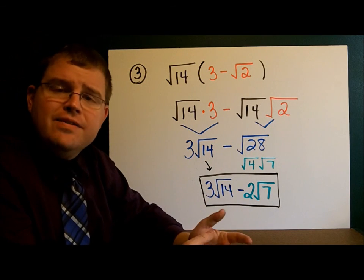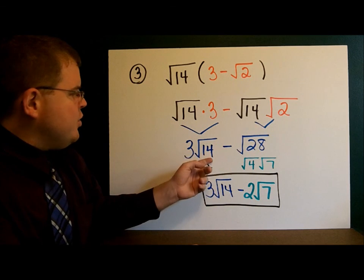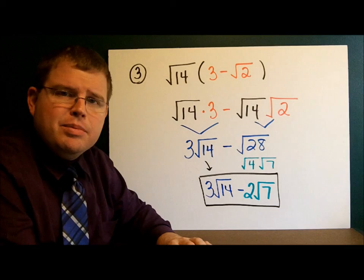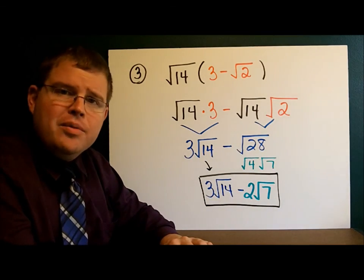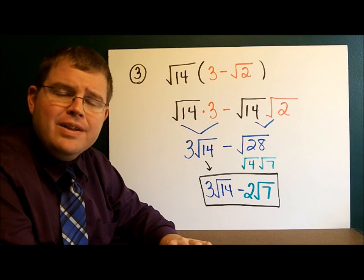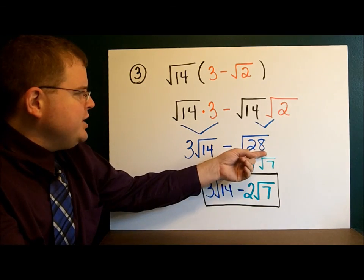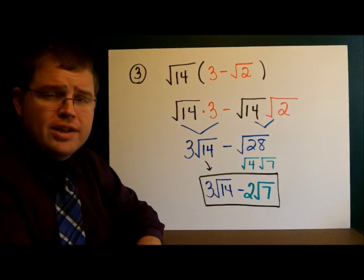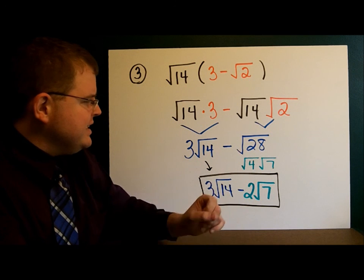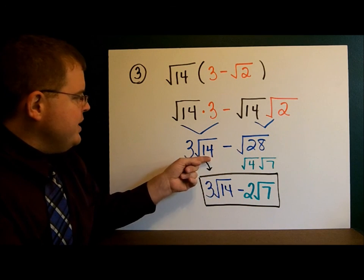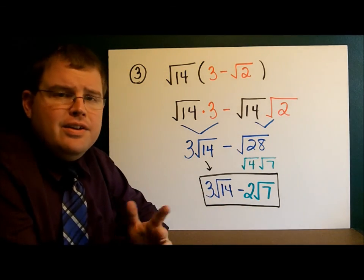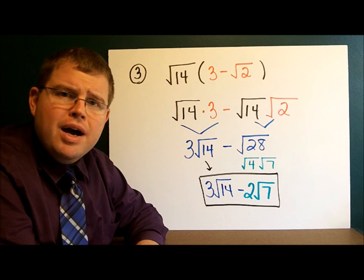Now, I have to look to see if anything simplifies. Square root of 14, I checked in my list, went down the perfect squares. It doesn't simplify. Square root of 28, I went down my list. And I found out that 4 goes into 28 evenly. 4 times 7. And so, I switched out the 28 with the 4 and the 7. Square root of 4 is 2. Square root of 7 stays the same. So, I have 3 square roots of 14 minus 2 square roots of 7. There's nothing to combine. It looks like I'm done with this problem.